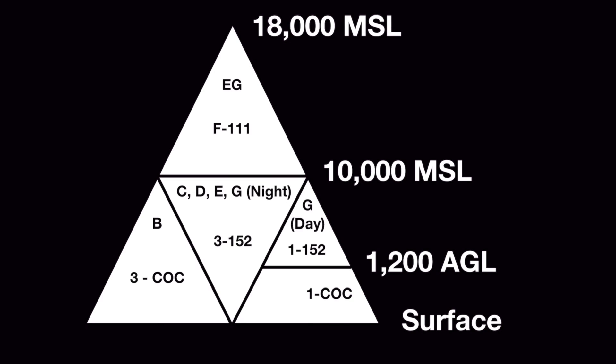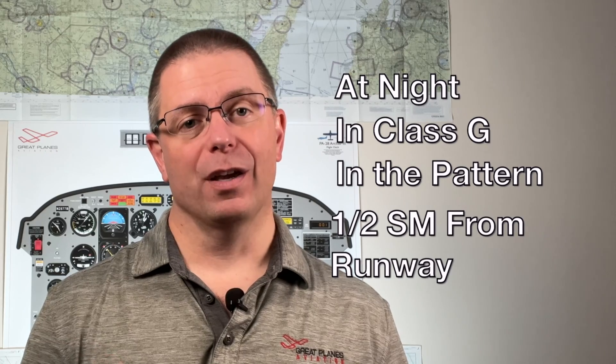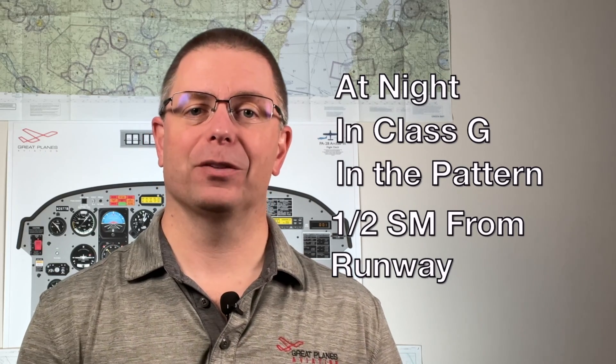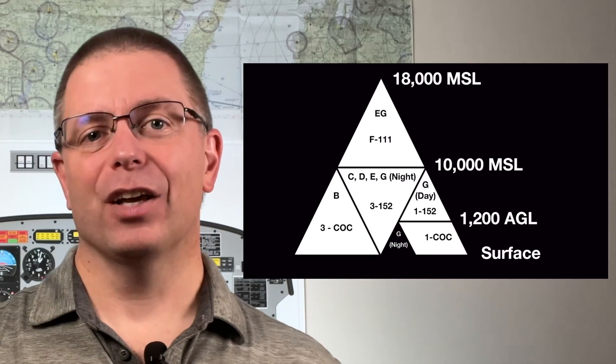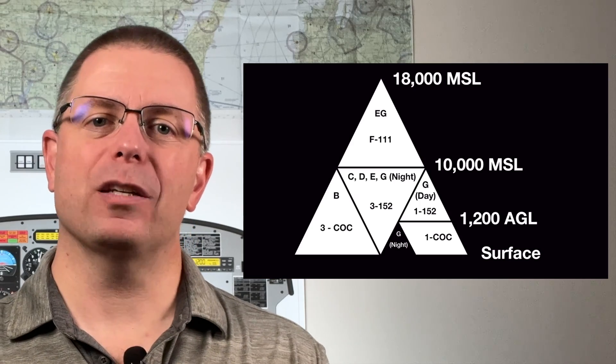The rightmost triangle is the busiest. Here we'll put 1-152 in the top half and 1-COC in the bottom half. The 1-152 reminds us that between 1,200 feet AGL and 10,000 feet MSL, the minimums are 1 statute mile, 1,000 feet above, 500 feet below, and 2,000 feet laterally. The 1-COC reminds us that in class Golf airspace below 1,200 feet AGL, the clearances are 1 statute mile and remain clear of clouds. Did you notice that everything within this triangle only needs 1 statute mile of visibility? Before we leave this space, there's one more thing we need to add. If you are flying at night in class Golf airspace, in the pattern within one-half mile from the runway, visibility and clearance at night are the same as they are during the day. To help me remember this, I add one more little triangle right here — I color it black to represent night — and notice that I make it one half the height of the smaller triangle, which helps me remember that I need to be within one-half mile of the runway.